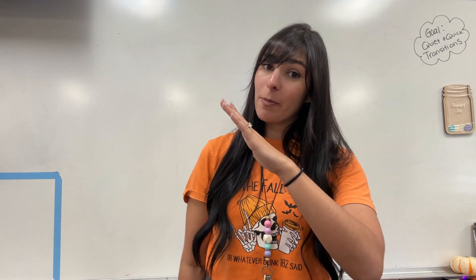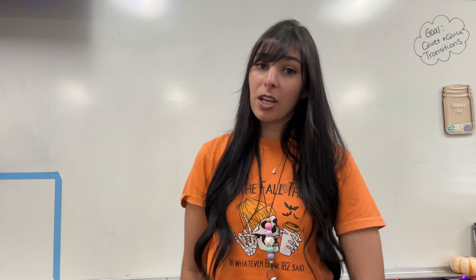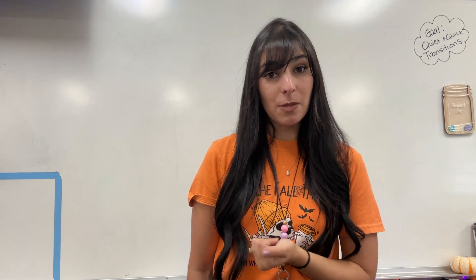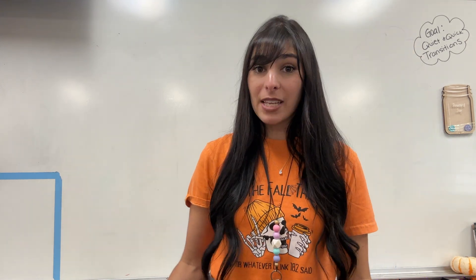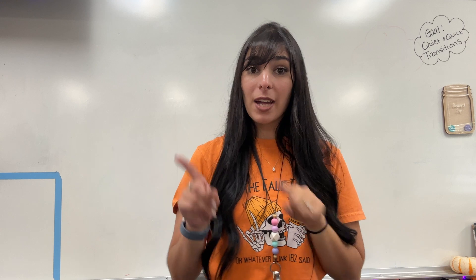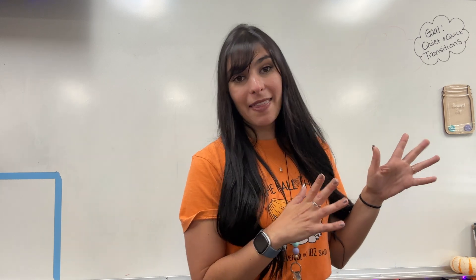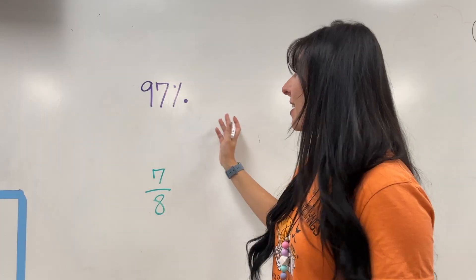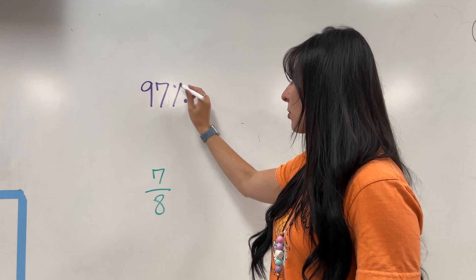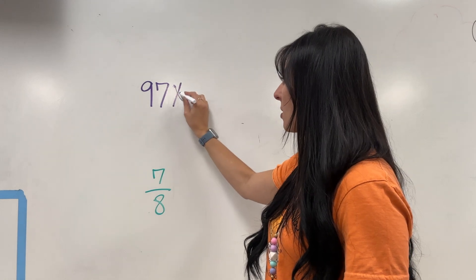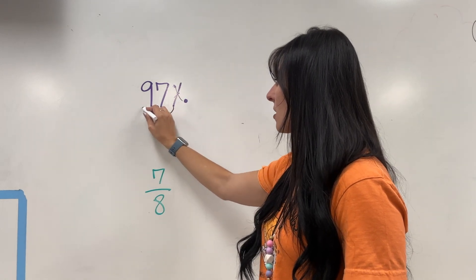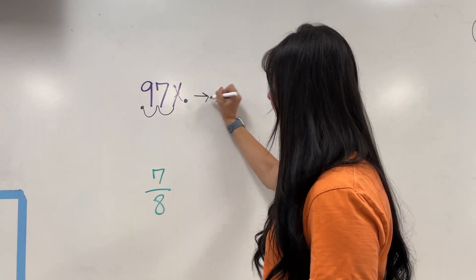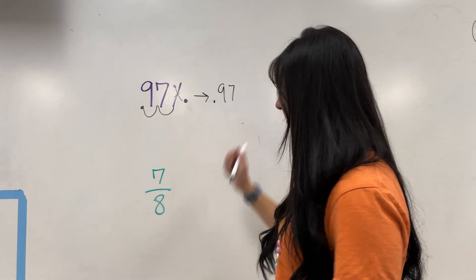First, if you have a fraction and want to make it a decimal, you're going to divide the numerator by the denominator — there's your decimal. If you have a percent, you're going to jump two spaces to the front, and that's where your decimal goes. Get rid of that percent sign. So if I have 97%, I'm going to cross out the percent sign and jump two spaces to the front. I now have 0.97.